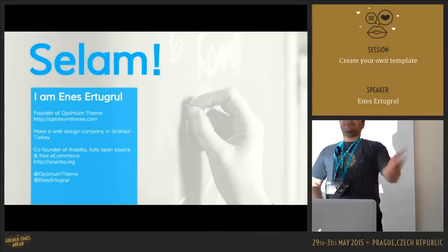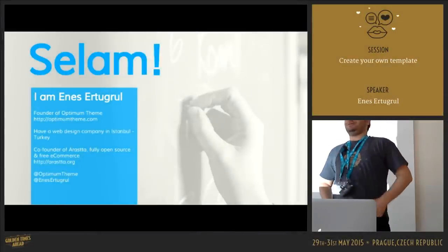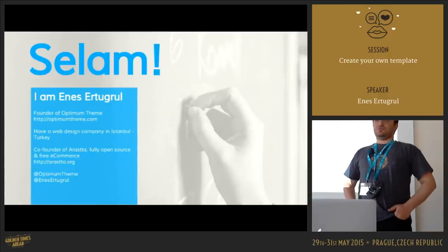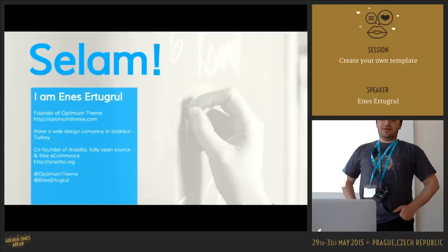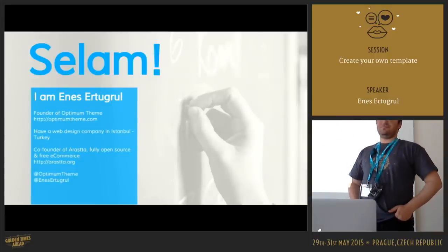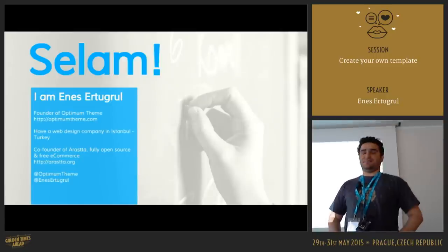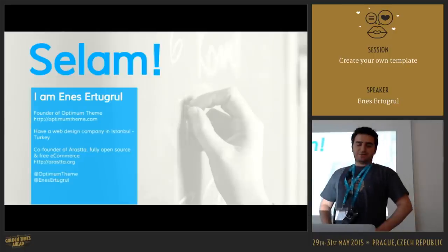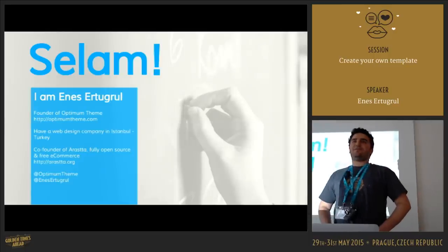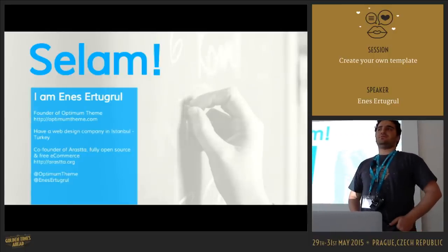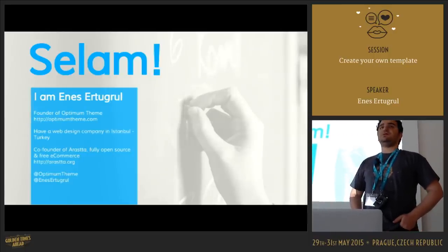Selam — that means hello in Turkish. My name is Enes Ertuğrul and I am founder of Optimum Theme, a Joomla Template Club, which is a new template club. I also have a web design company in Turkey and we have worked with Joomla since 2008.